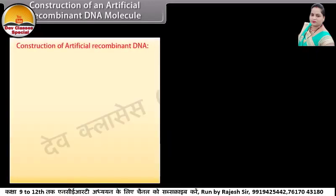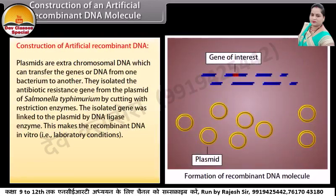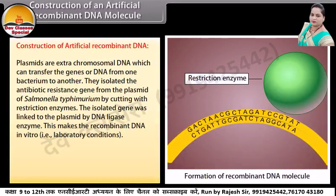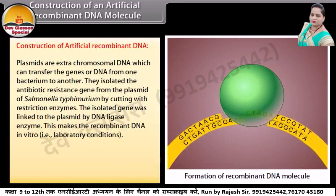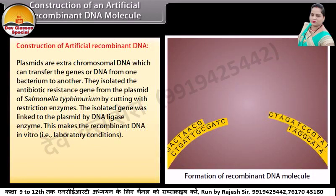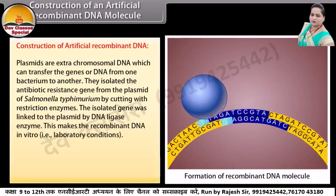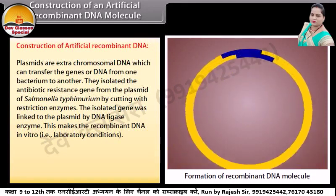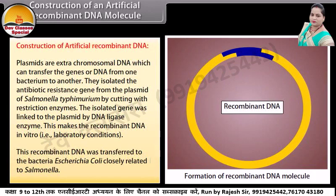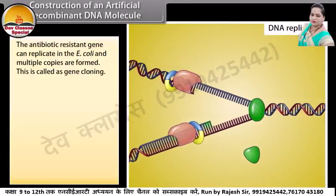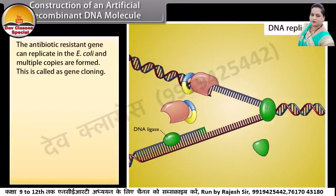Construction of artificial recombinant DNA. Plasmids are extra-chromosomal DNA which can transfer genes or DNA from one bacterium to another. They isolate the antibiotic resistance gene from the plasmid of Salmonella typhimurium by cutting with restriction enzymes. The isolated gene was linked to the plasmid by DNA ligase enzyme. This makes the recombinant DNA in vitro, that is, under laboratory conditions. This recombinant DNA was transferred to the bacteria Escherichia coli, closely related to Salmonella. The antibiotic resistance gene can replicate in E. coli and multiple copies are formed. This is called gene cloning.